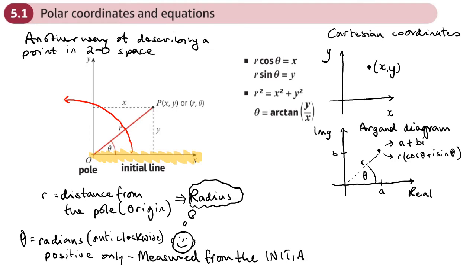It's a bit like bearings, which are measured from north — this angle is measured in radians from the initial line. It's also helpful to be able to convert polar coordinates to Cartesian coordinates, and we can do that using: r cosθ gives us the x-coordinate, and r sinθ gives us the y-coordinate.